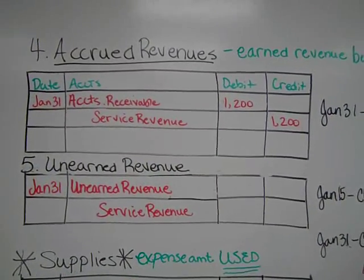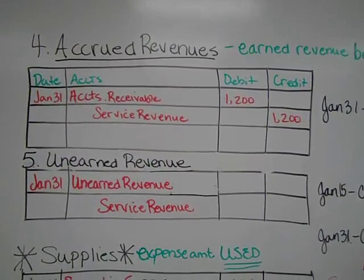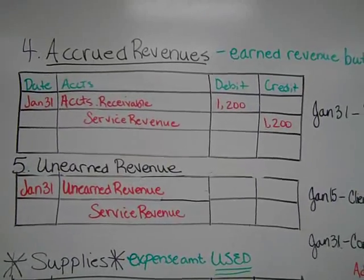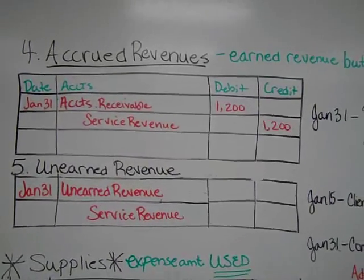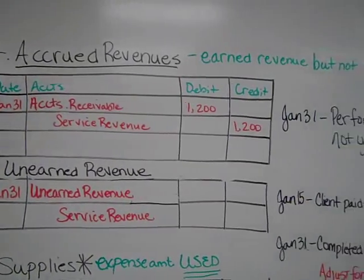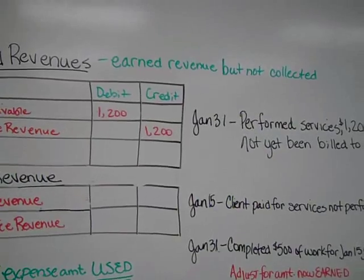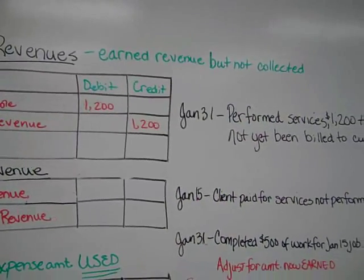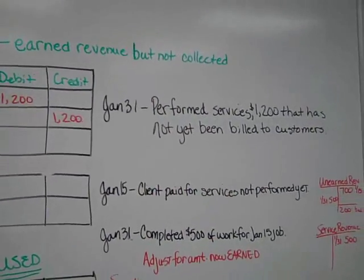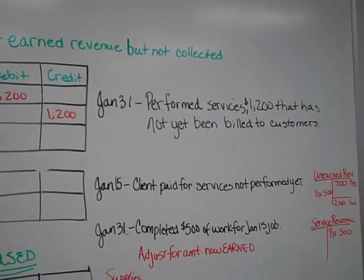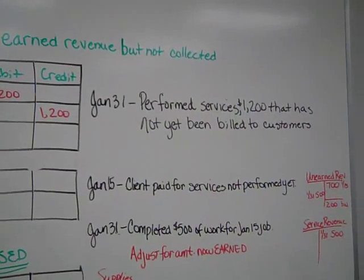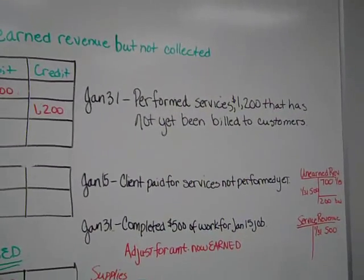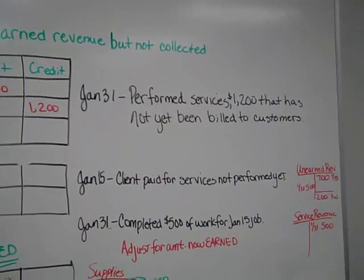This video covers the fourth and fifth adjusting entry on the list plus the special case. The fourth one is accrued revenues — that is when we have earned the revenue but we have not yet collected the money for it. The entry might read: performed services $1,200 that has not yet been billed to customers.